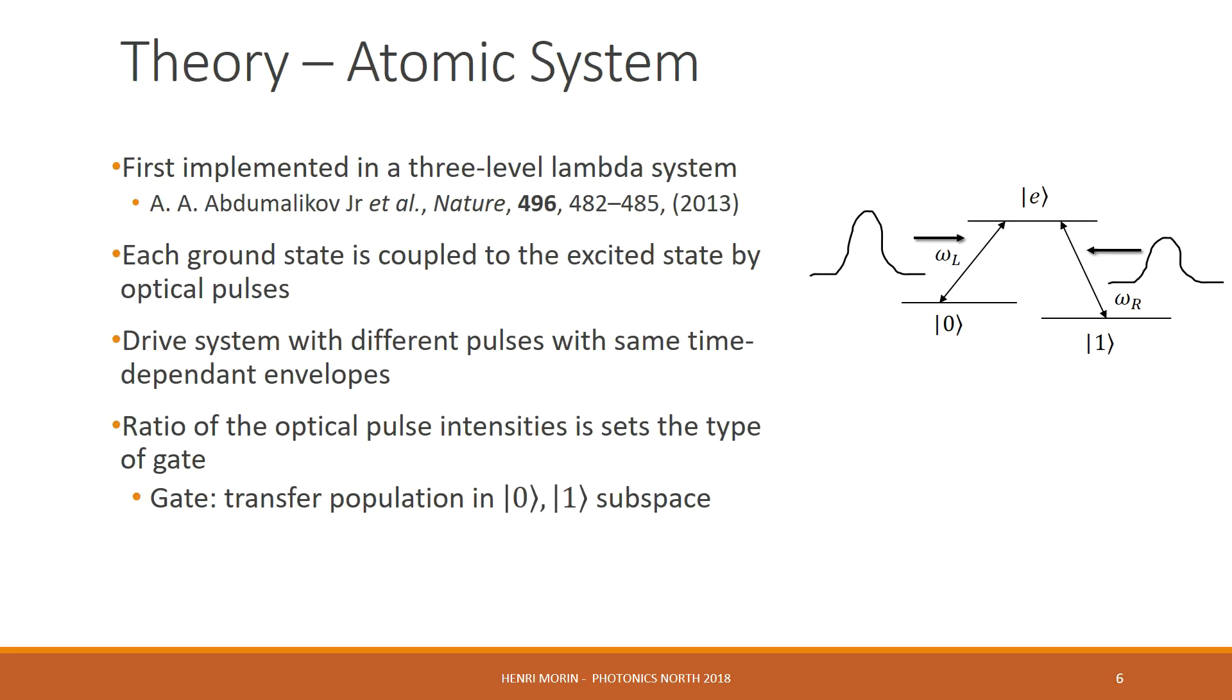As mentioned before, this has been done previously in an atomic system from this paper from 2013. Specifically, it is a three-level lambda system. We have two ground states, the zero and the one state, and we also have the excited state in the middle. Each ground state is coupled to the excited state by optical pulses. We drive the system with different pulses with same time-dependent envelopes.